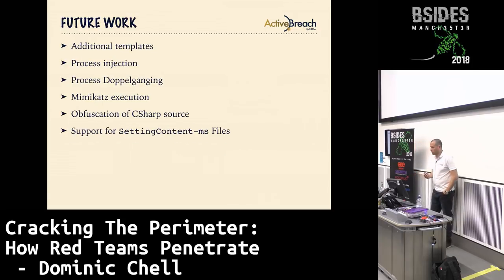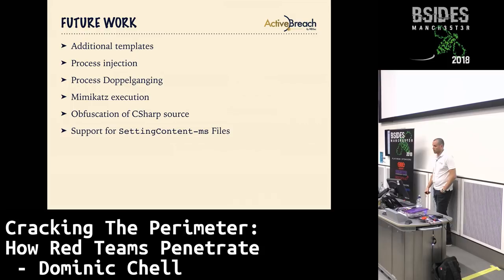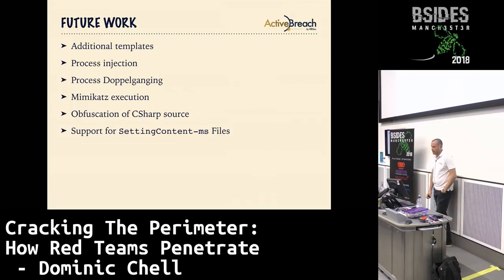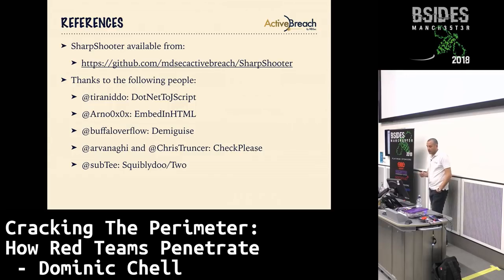Future work: I've already started development on a few things. I'd like to add more templates beyond just shellcode execution — things like running Mimikatz quite easily. I'd like to add more obfuscation, particularly to the C-sharp code that touches disk. And probably additional file types — Matt Nelson found some interesting files affecting Windows 10, like the Settings Content MS file, which would be interesting to add. You can download the tool from MDSEC's GitHub page. Thanks to the guys whose ideas I borrowed — I recommend following all of them on Twitter.